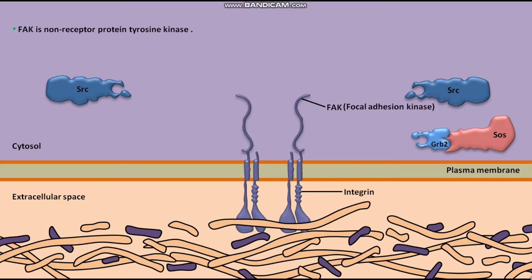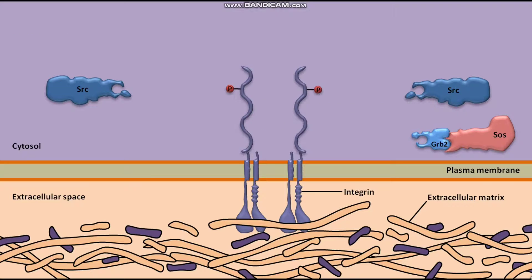During integrin signaling, integrins bind to extracellular matrix components such as fibronectin. This binding leads to the autophosphorylation of FAK. As a result, integrins are clustered and FAK is activated.